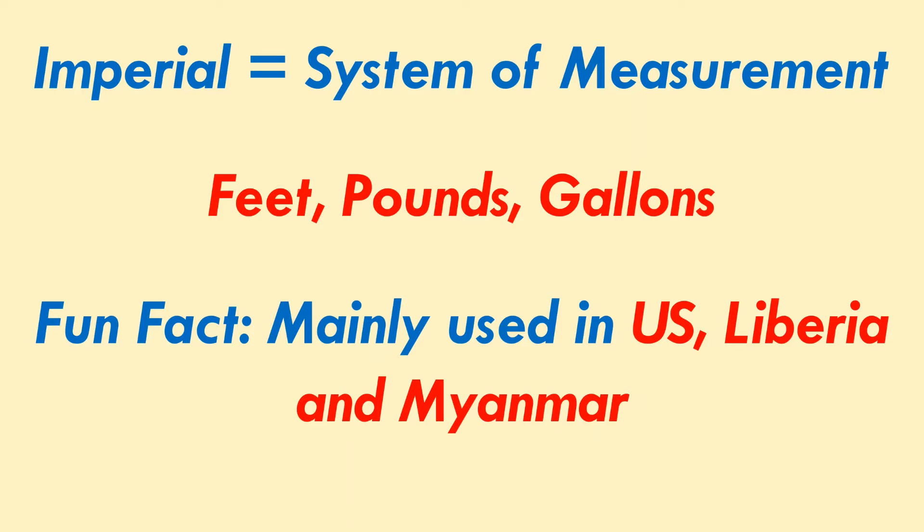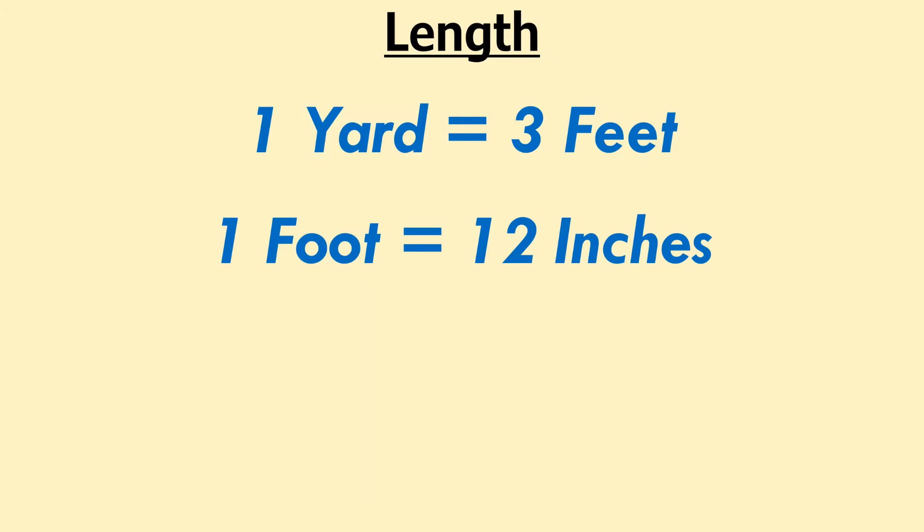Let's move on to the imperial length. One yard is equal to 3 feet. One foot, which is just the singular form of feet, is equal to 12 inches.